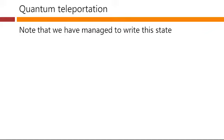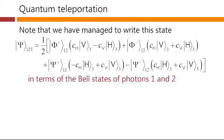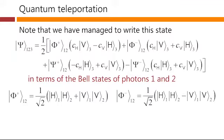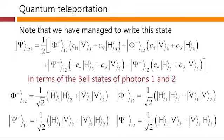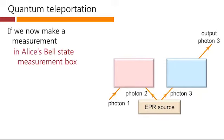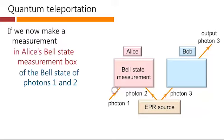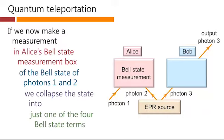Note that we've managed, therefore, to write this state in terms of the Bell states of photons 1 and 2, which are these states. If we now make a measurement in Alice's Bell state measurement box, so here's Alice's Bell state measurement box and Bob is over here, of the Bell state of photons 1 and 2, we collapse the state into just one of the four Bell state terms.